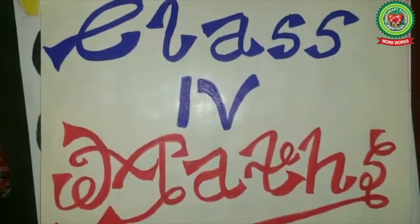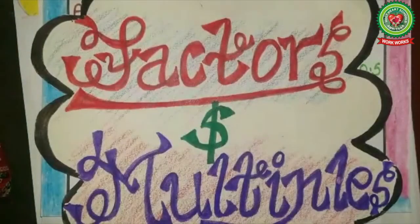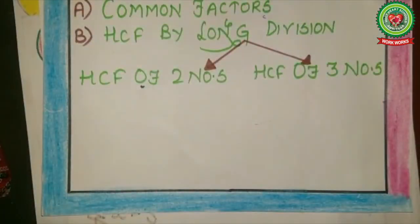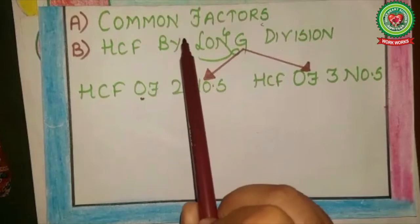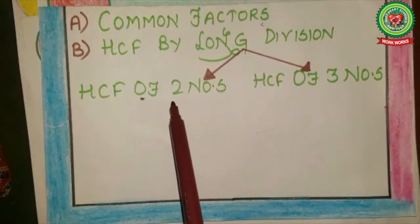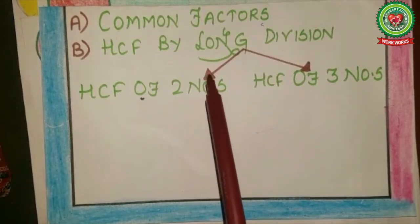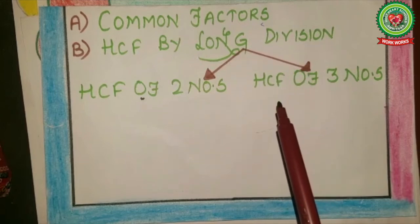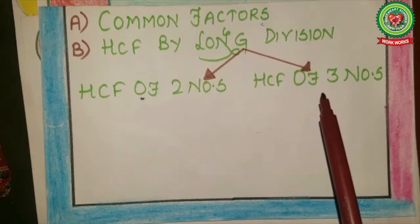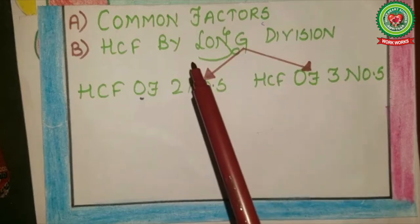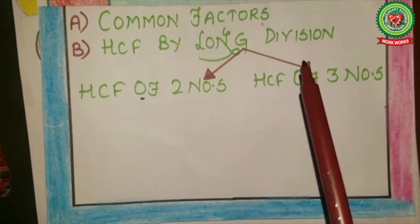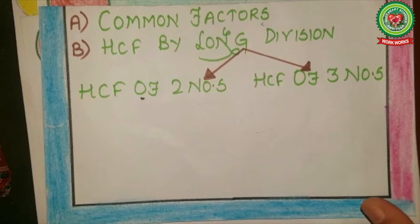Hello students, welcome to maths class. In chapter Factors and Multiples, you have already done the topic Common Factors and HCF of two numbers by long division method. Today I will discuss with you HCF of three numbers by long division method. To understand this topic, let's take some examples.